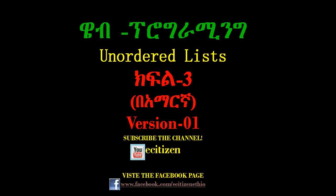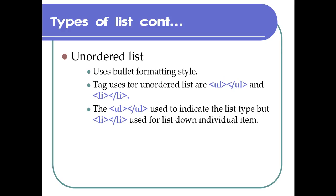We are going to have an unordered list. We are going to have a list structure. If we are going to have a list of different options, we are going to have an unordered list.